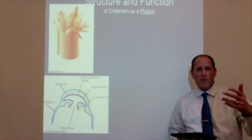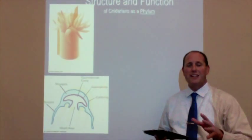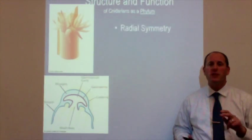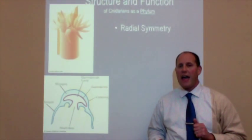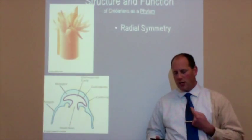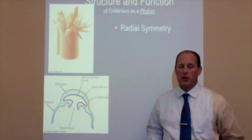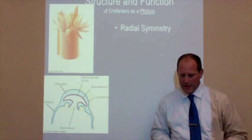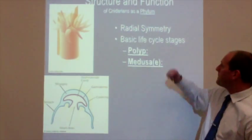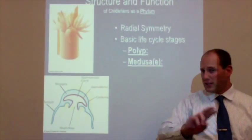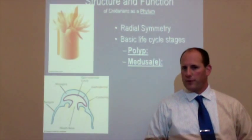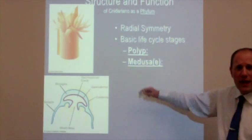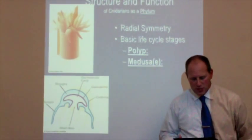First, we're going to talk about the structure and function of organisms in the entire phylum Cnidaria as a whole. All of these organisms have radial symmetry — they have a round shape — meaning there is no right or left side. Their basic life cycle stage is a little bit unique, different from those sponges. They take two different forms: the first is the polyp, and the second is the medusa form.